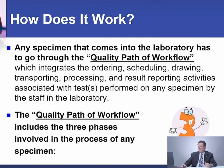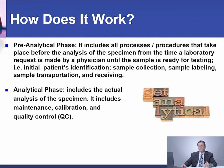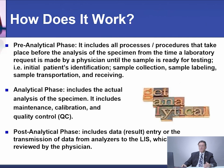The quality path of workflow includes three phases involved in the process of any specimen. The pre-analytical phase is all the processes and procedures that take place before the analysis of the specimen — from the time a laboratory request is made by a physician until the sample is ready for testing. For example: initial patient identification, sample collection, sample labeling, sample transmutation, and receiving.